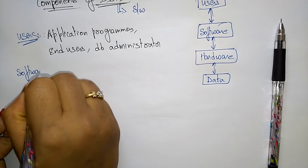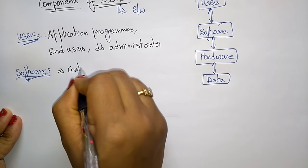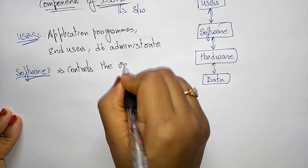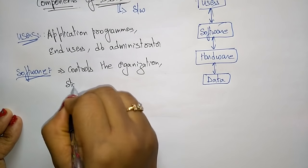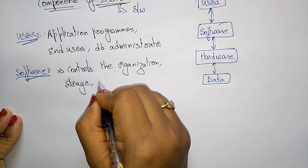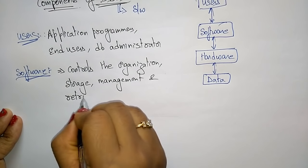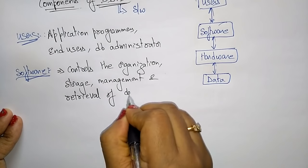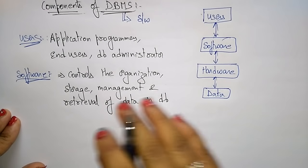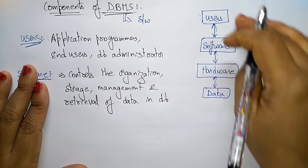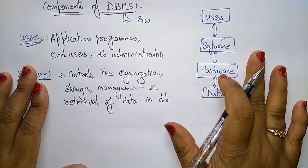Now coming to software — software is nothing but it controls the organization, storage management, and retrieval of data in a database. That is what you call software.